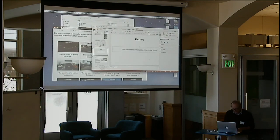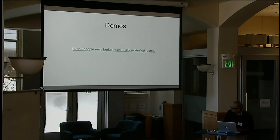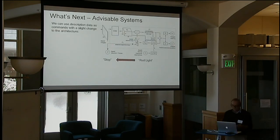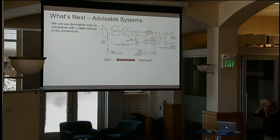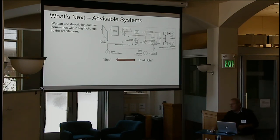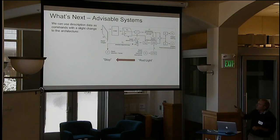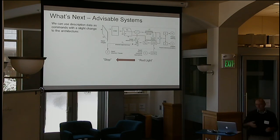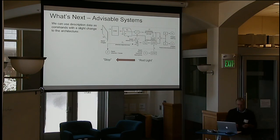What we're trying to do now is take the same data and generate advice to the system. Because we have text grounded in the images, we can use it to recognize states such as stop signs or red lights, and also learn to inject control using the text into the system. The idea is to go from just explaining what the vehicle is doing, to having some influence over it using similar language.